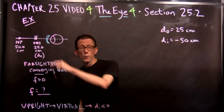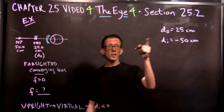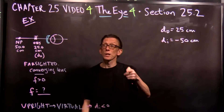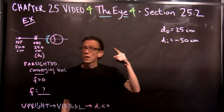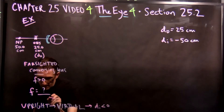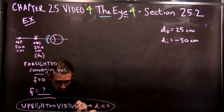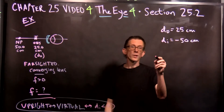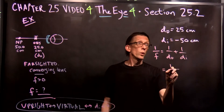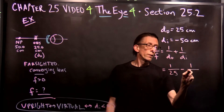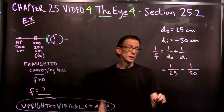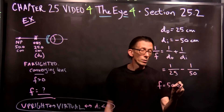So now we know the object distance — we can't move the object, the bug's right there 25 centimeters away. The image distance has to be the near point; we need to trick the eye into thinking the bug is back there. The image has to be at 50 centimeters but negative because it's got to be upright. Now we can solve for f: 1/f = 1/d₀ + 1/dᵢ = 1/25 − 1/50. You solve this and you get f = 50.0 centimeters.